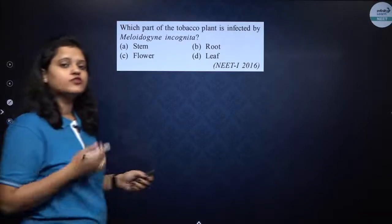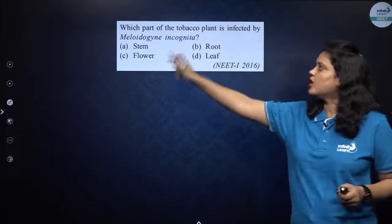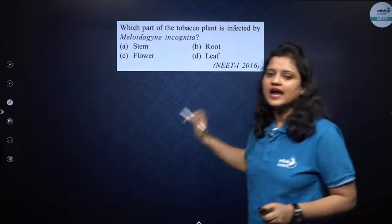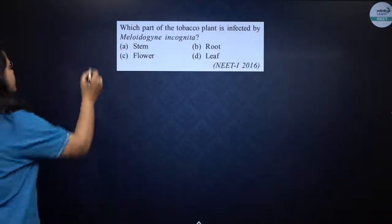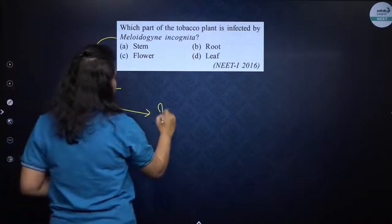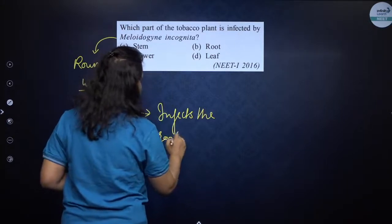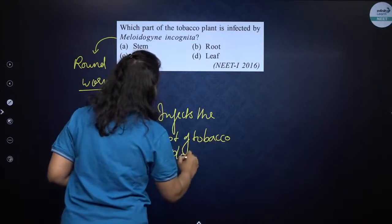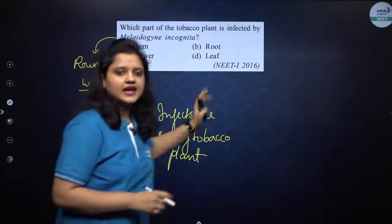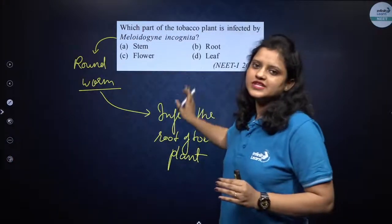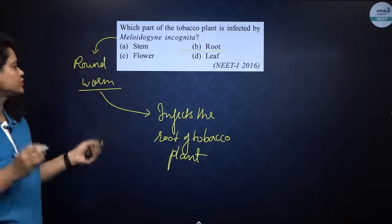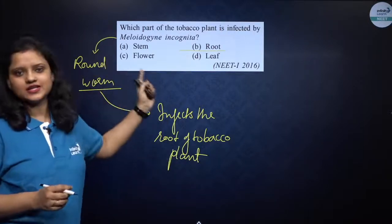Next question: which part of the tobacco plant is infected by Meloidogyne incognita? The options are stem, root, flower, and leaf. Meloidogyne incognita is a nematode — a roundworm. This roundworm infects the root of the tobacco plant and forms root nodules. We have used RNA silencing to get rid of this nematode infection. The correct option is B — root.